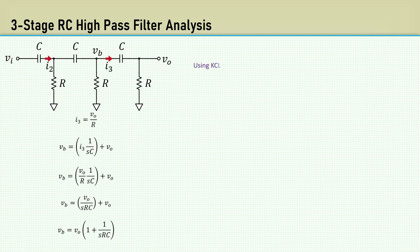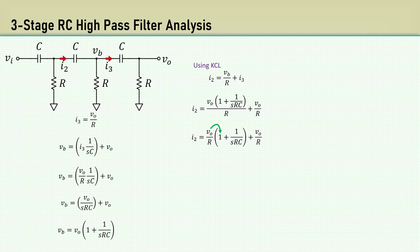Using KCL, we can say that I_2 equals V_B over R plus I_3. Substituting the expressions for V_B and I_3. Now distributing V_0 over R. Then factor out V_B over R.